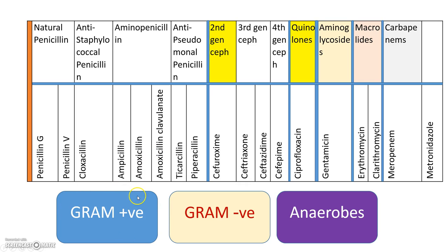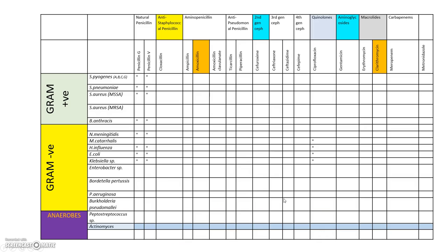These antibiotics are meant to cover different organisms — some cover gram-positive bacteria, some cover both gram-positive and gram-negative, some cover only gram-negative, and some cover anaerobes. This is just an overview of the drug groups.